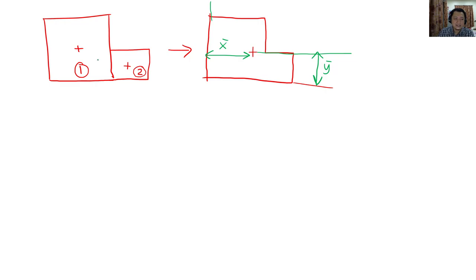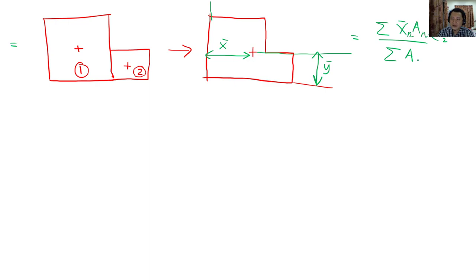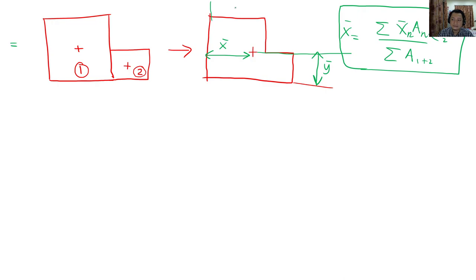The formula requires finding x times area for each individual part, then dividing by the total area. You calculate for part 1 and part 2 separately, and the denominator is the total area of 1 plus 2. This same approach works for both x-bar and y-bar. Let's now do a real numerical example.